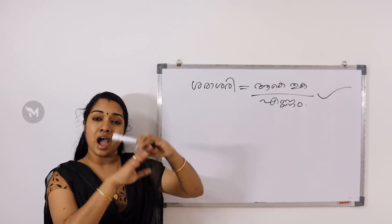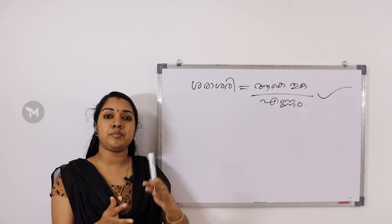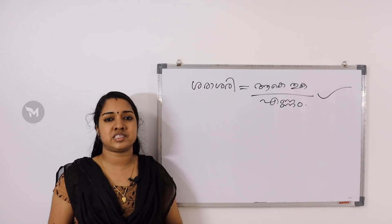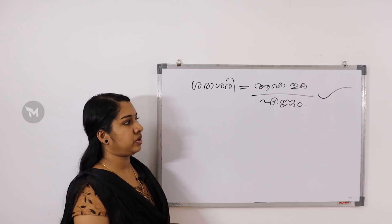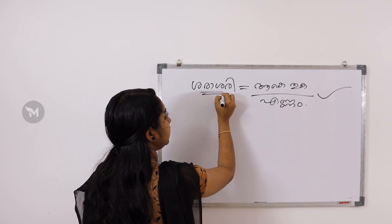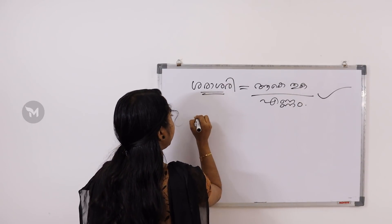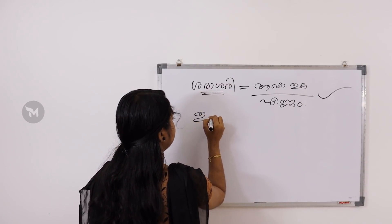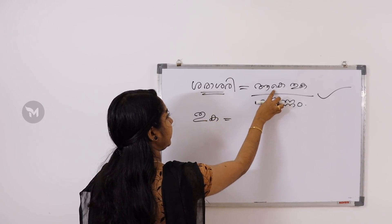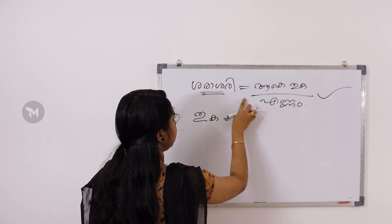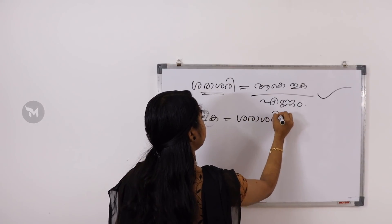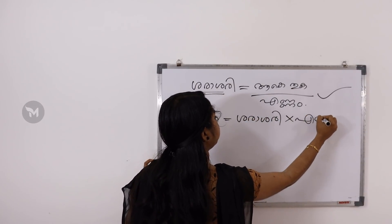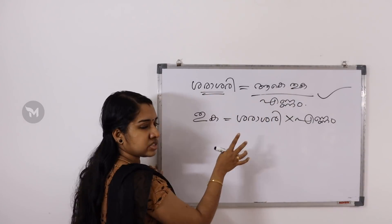How much does it earn? We know how much money is available. How much money can we earn? We add money. So the equation is equal to n.